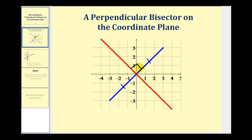In fact, all four of these angles would be right angles. So the goal of this video is to determine the equation of this red perpendicular bisector given a segment on the coordinate plane.